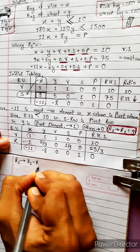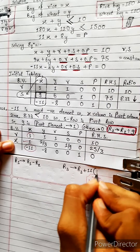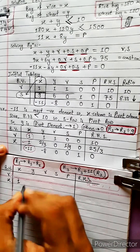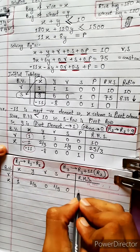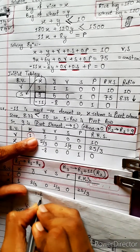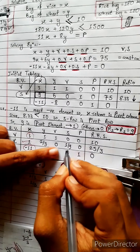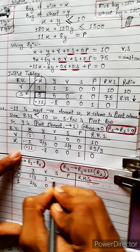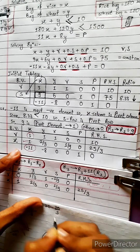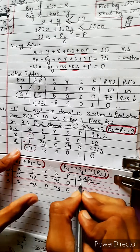R1 changes into R1 minus R2. R3 changes into R3 plus 11 times R2. For R1 minus R2: 1 minus 1 is 0; 1 minus 2/3 — taking LCM 3 — gives 1/3; 1 minus 0 is 1; 0 minus 1/9 is minus 1/9; 0 minus 0 is 0; and 3 minus 25/3 — LCM 3 — gives 30/3 minus 25/3 equals 5/3.